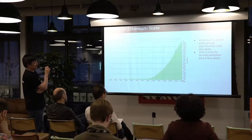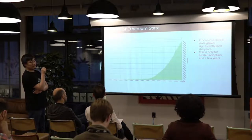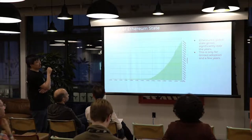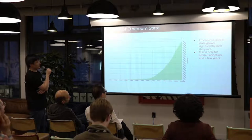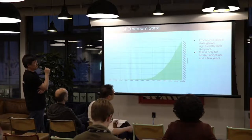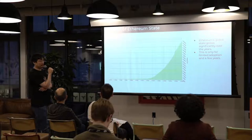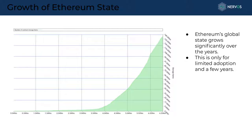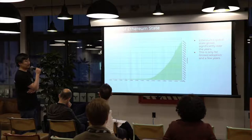Here's an example of the growth of Ethereum state. The recent data shows around 10 gigabytes of global storage, and just from the shape of the chart it has grown significantly over the years. We've only seen Ethereum for four or five years and haven't really seen mainstream adoption of blockchain tech yet. We can only imagine how much storage will grow if we see real mass adoption and what resources would be needed to run full nodes.